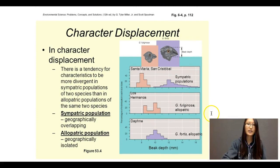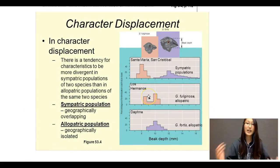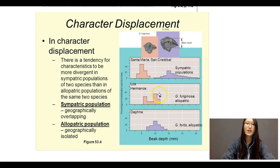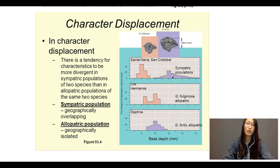Character displacement is where instead of changing where you get your resources to minimize competition, you can also change your character so you're no longer eating the same food. It's a result of evolution — those that have a change in character and are able to eat other food without competing with the other species will live on. On these two islands, two bird species originally have the same beak depth and eat the same seeds. But on one island, in order to minimize competition through evolution, one bird develops a smaller beak and one develops a bigger beak, so they're no longer competing for the same resources and both survive.